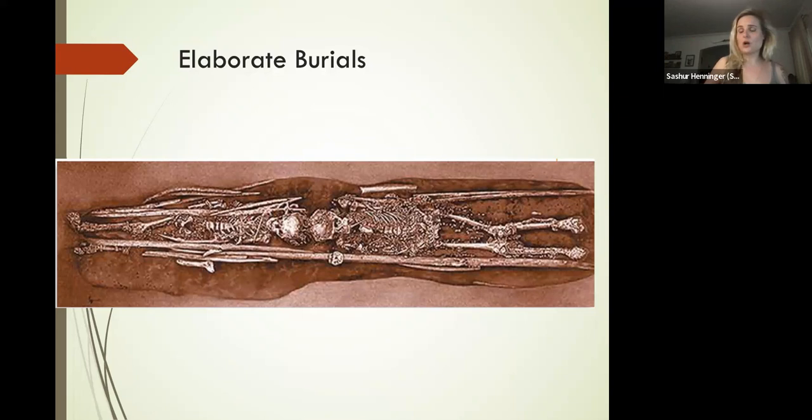Then we kind of work our way down. So by 15,000 years ago, we are kind of everywhere in the world—a highly advanced species. Every other species is gone, and we will proliferate.